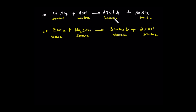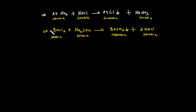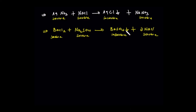Silver chloride is insoluble — it is a precipitate. Sodium and nitrate form sodium nitrate, which is soluble. So we get a solid precipitate of silver chloride in solution alongside soluble sodium nitrate.